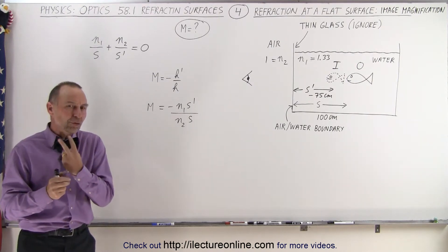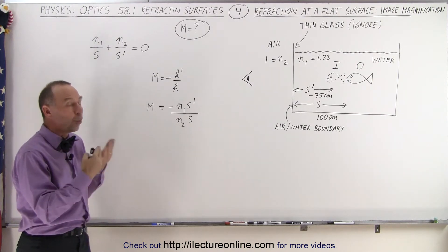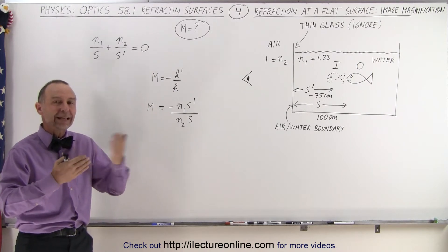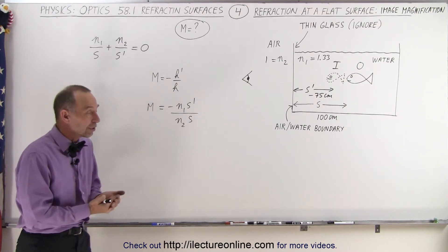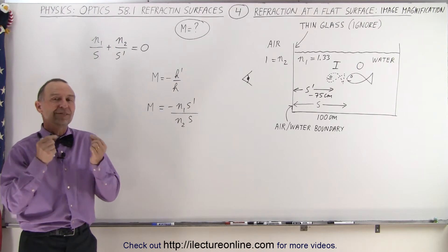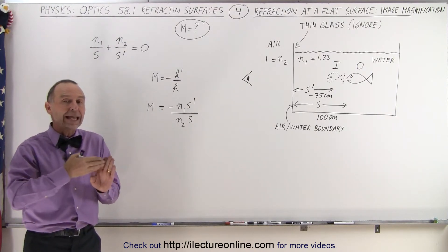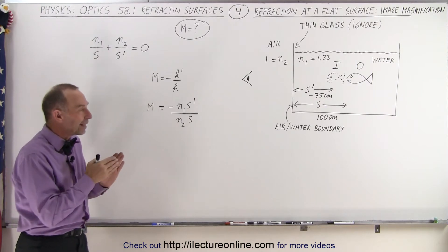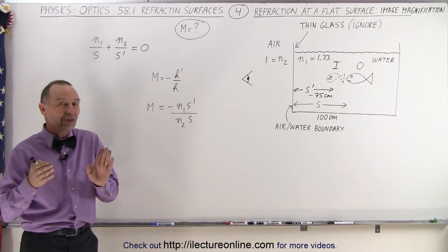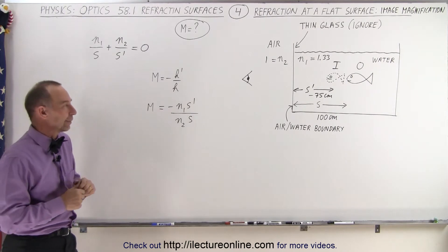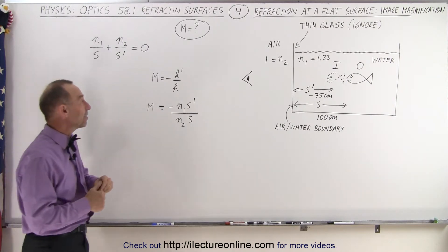And it turns out that there's two things that affect the magnification. One is the relative size of the index of refraction on both sides of the boundaries. The second is the relative distance between the boundary and the object and the boundary and the image. And it turns out in the case of flat surfaces, those two factors appear to be canceling each other out. So let's check and see if that's the case.